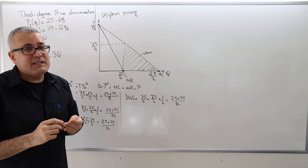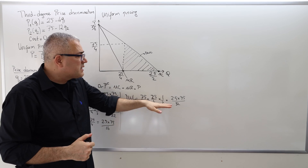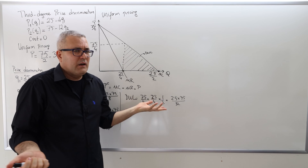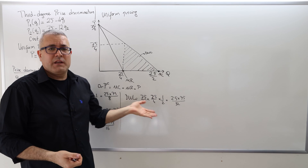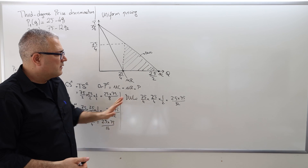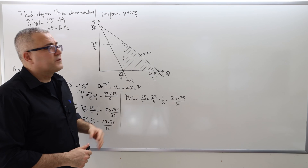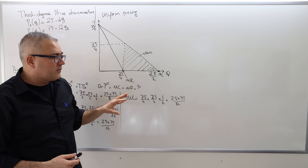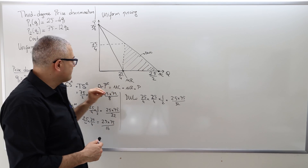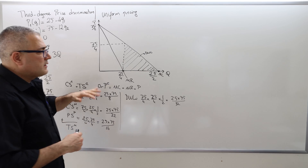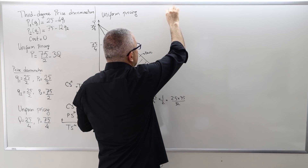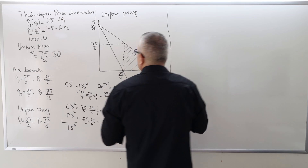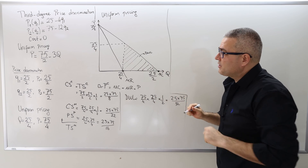Just leave it as is — this is the correct solution. So that's how we calculate the surpluses under uniform pricing. Now I'm going to calculate the surpluses under third-degree price discrimination. There are two groups, so each group will have different surpluses. I need to draw the demand curves, marginal revenue curves, and marginal cost curves separately for each group.